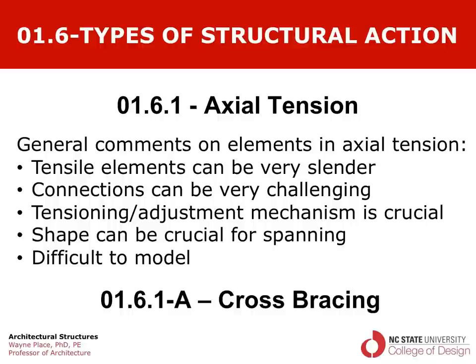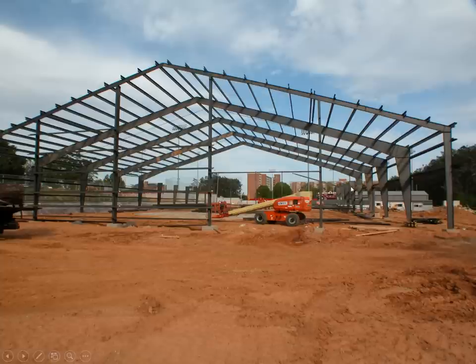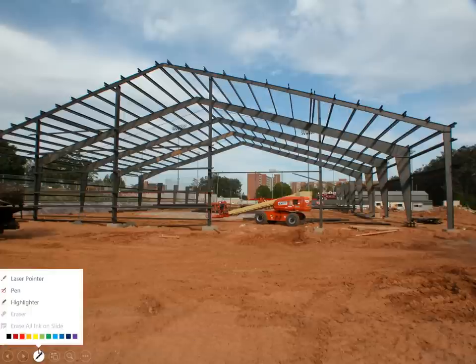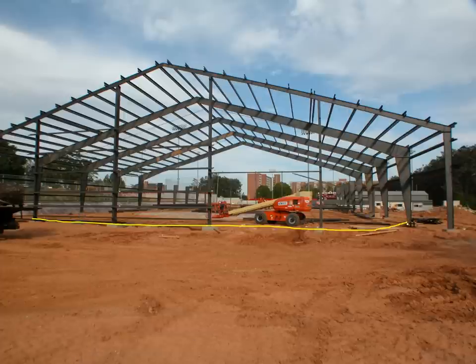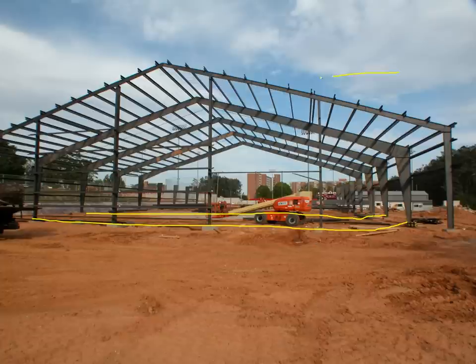Those are general comments about tension. Now we're going to focus on our second video dealing with cross bracing. Here we have a structure consisting of rigid frames which are responsible for spanning from one side to the other under gravity loads, and they tend to be fairly substantial. They're also responsible for resisting wind forces in the direction parallel to the plane of the rigid frame.